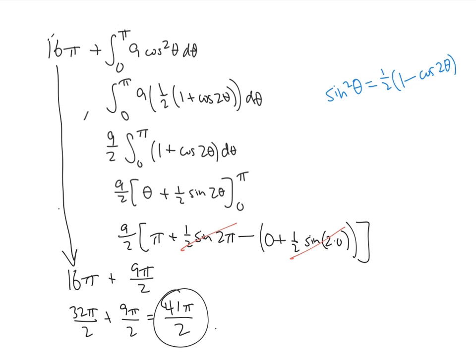So that together with the half-angle formula that we used here, the 1 plus cosine 2 theta, those are going to be things that you're going to see fairly frequently in these kinds of problems.